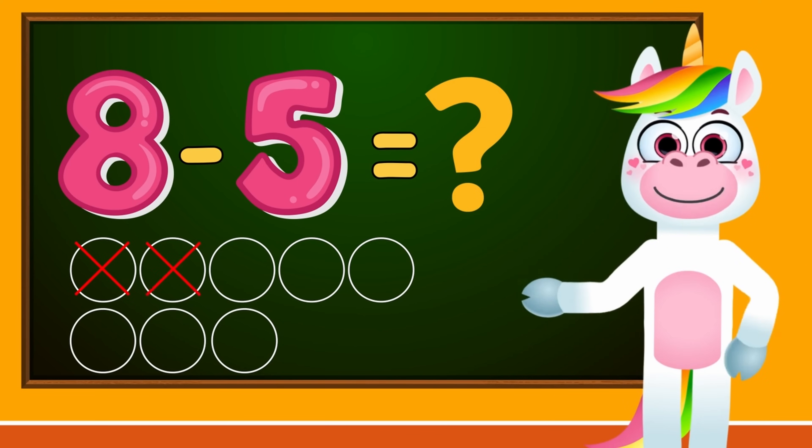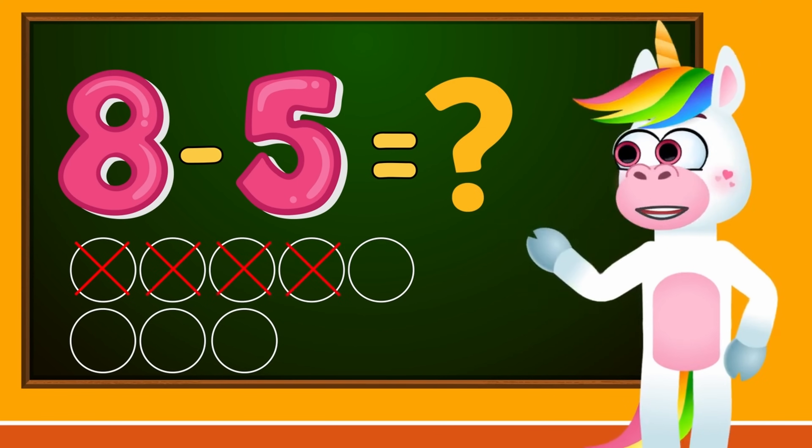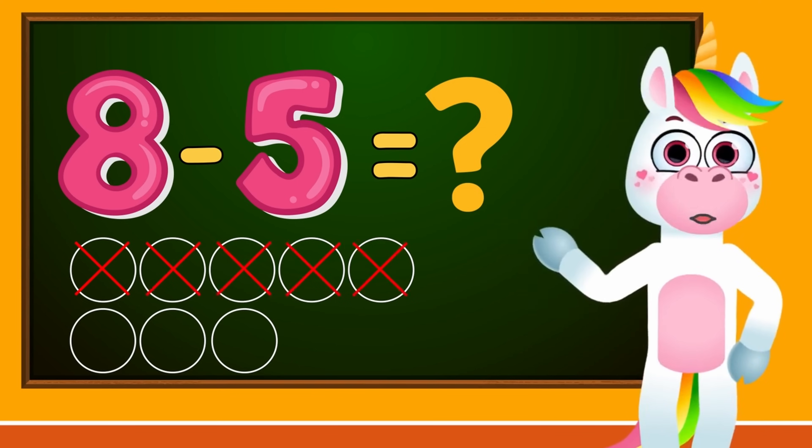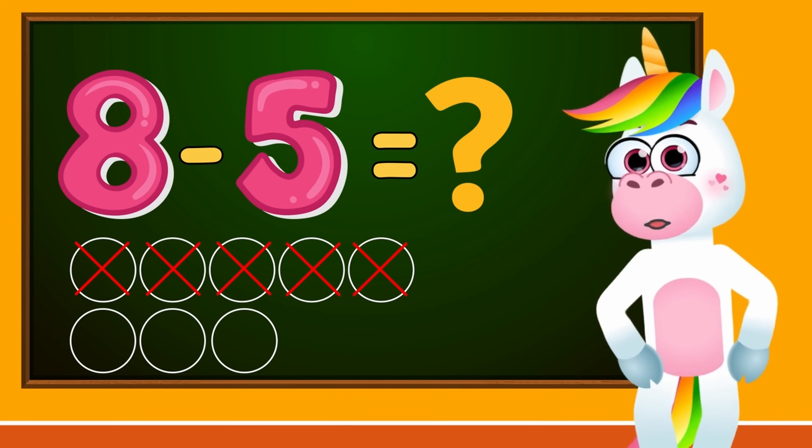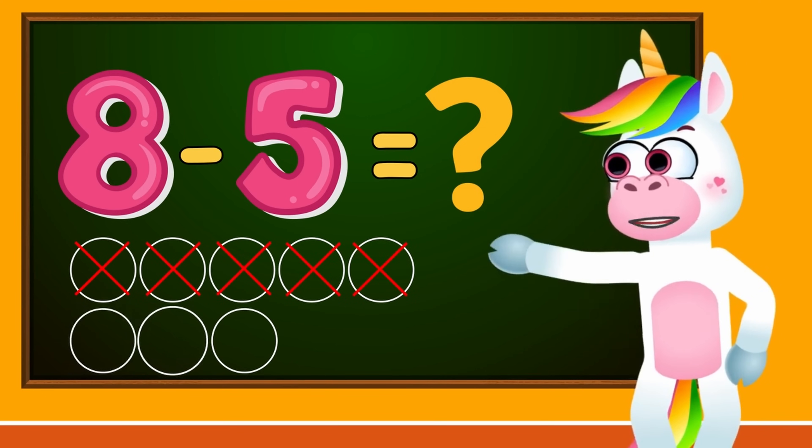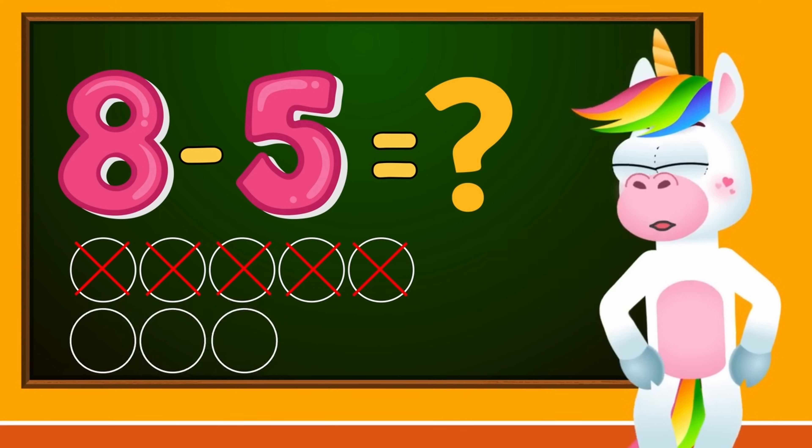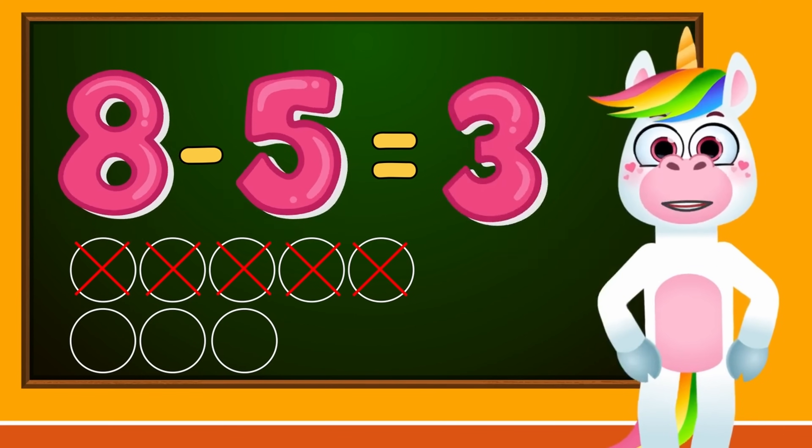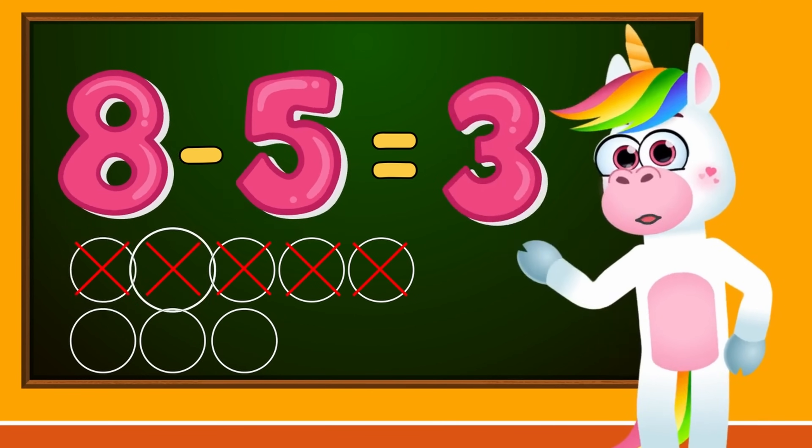1, 2, 3, 4, 5. Well done, kids. The number of circles we have left. 1, 2, 3. So kids, 8 minus 5 equals 3. Well done, kids.